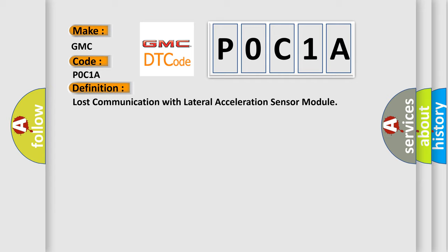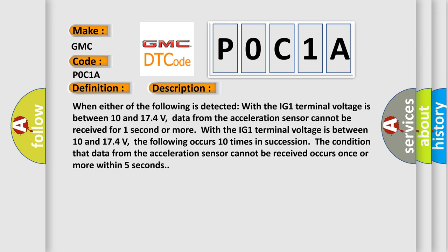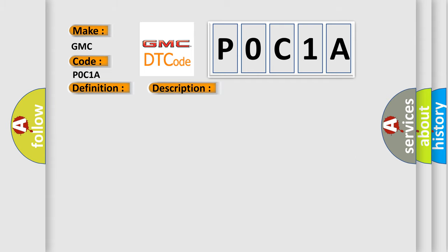Here is a short description of this DTC code. When either of the following is detected with the IG-1 terminal voltage between 10 and 174 volts: data from the acceleration sensor cannot be received for one second or more, or the condition that data from the acceleration sensor cannot be received occurs once or more within five seconds — and this occurs 10 times in succession — the fault is triggered. This diagnostic error occurs most often in these cases.